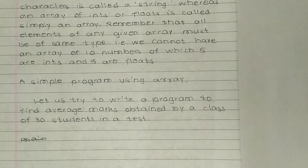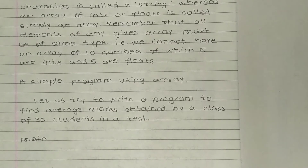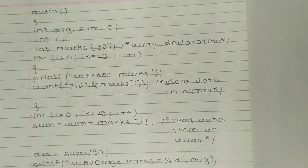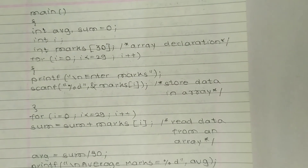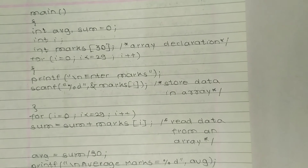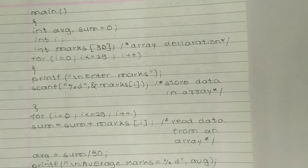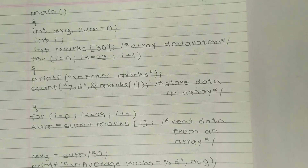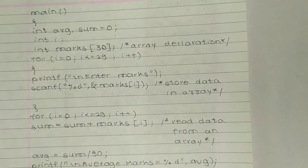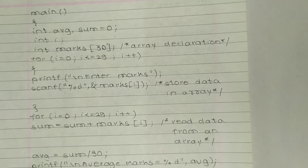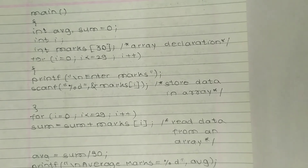A simple program using array: let us write a program to find the average marks obtained by a class of 30 students in a test. In main: int average, sum = 0; int i; int marks[30]. So average and sum are integers, i is an integer, and marks[30] is the array declaration.